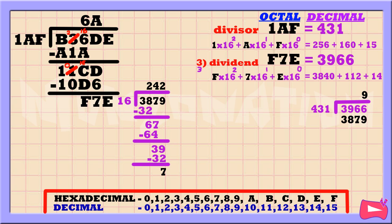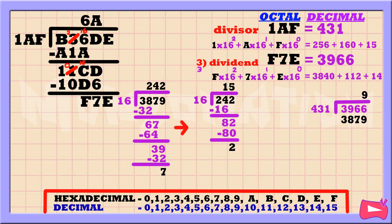And obviously it's not a hex number, so let's convert 242 into a hex number. 24 divided by 16 is 1. Then 1 times 16 is 16. 24 minus 16 is 8. Bring down 2. 82 divided by 16 is 5. Then 5 times 16 is 80. Subtract. 82 minus 80 is 2. The quotient, which is 15, is F in hexadecimal. So now we can stop dividing. Remember that you can stop dividing if the quotient is less than or equal to 15, which is F in hexadecimal.